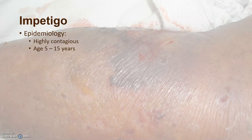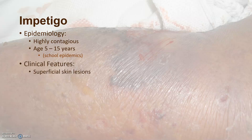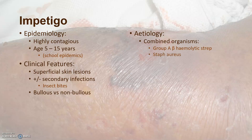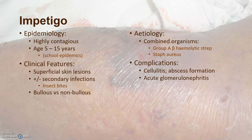Impetigo is a highly contagious skin condition occurring in young school-age children, particularly when they interact regularly — school epidemics can occur. These tend to be superficial skin lesions with or without secondary infections, or they occur because of secondary infections of insect bites. The lesions may be bullous or non-bullous. It tends to involve combined organisms: group A beta-hemolytic strep and Staph aureus. Importantly, complications include progression to deeper infections such as cellulitis and abscess formation, and it can lead to acute glomerulonephritis because of the beta-hemolytic strep.